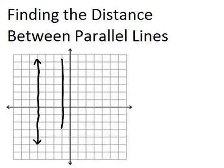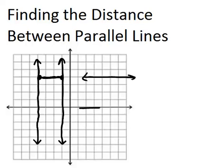These two vertical lines are parallel. Now, if the lines are vertical or horizontal, to find the distance between them, all you need to do is count how many units are between them. This is because the shortest distance between two lines will be a line that is perpendicular to both. To get a line perpendicular to both, if the lines are originally vertical, you would make one that's horizontal, and if the lines are originally horizontal, the shortest distance will be a vertical line.